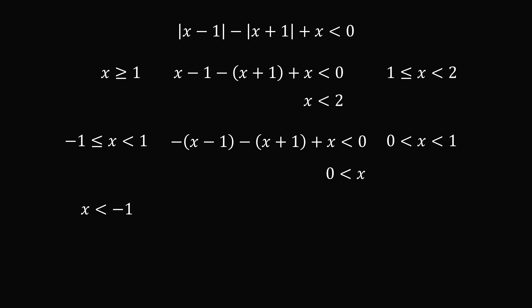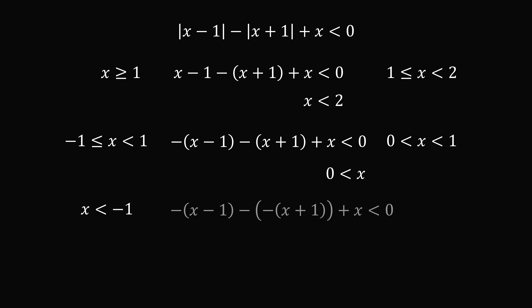Finally, if x is less than negative 1, then both terms inside the absolute values will be less than 0. So we have the opposite of x minus 1, minus the opposite of x plus 1, plus x, is less than 0. Carefully working through all the sign changes and grouping like terms, we end up with x is less than negative 2. Combining with x less than negative 1, we just get x is less than negative 2.